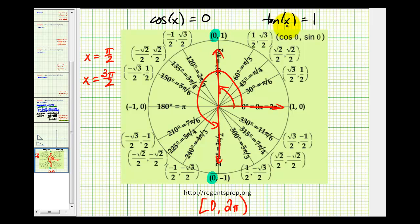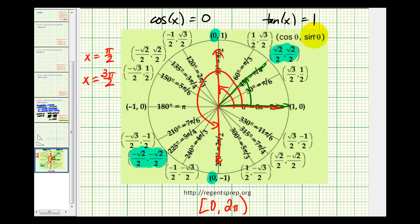Now let's find where tangent x equals 1. On the unit circle, tangent theta equals y divided by x, so both coordinates must be equal for a tangent value of positive 1. At pi over four radians the x and y coordinates are equal, and at five pi over four radians both coordinates are negative. So in the given interval we have pi over four radians and five pi over four radians.